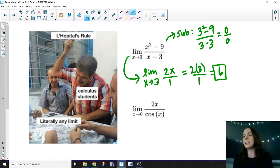Now let's talk about why we shouldn't always do this. You shouldn't always go straight to L'Hopital's Rule. Take a look at the second limit: the limit as x approaches 0 of 2x/cos(x). What happens when we use substitution?